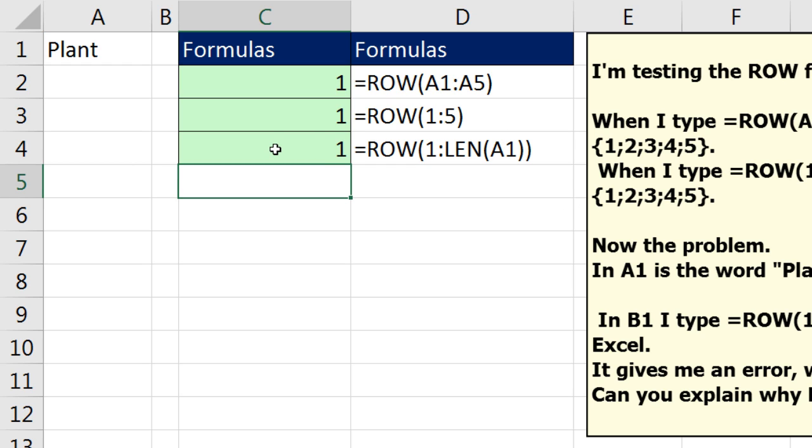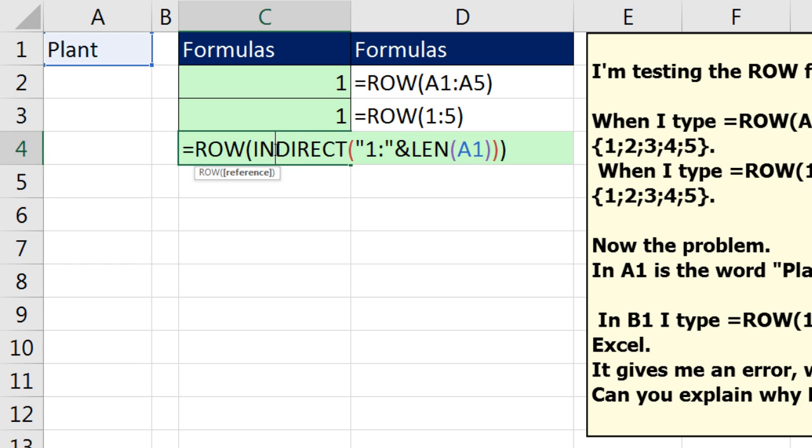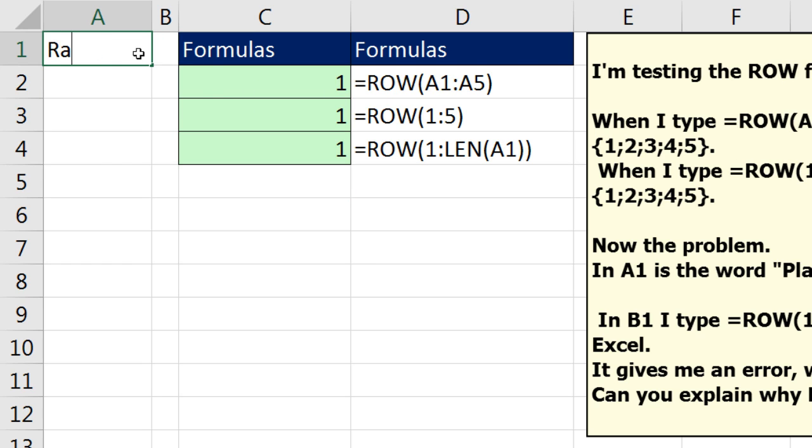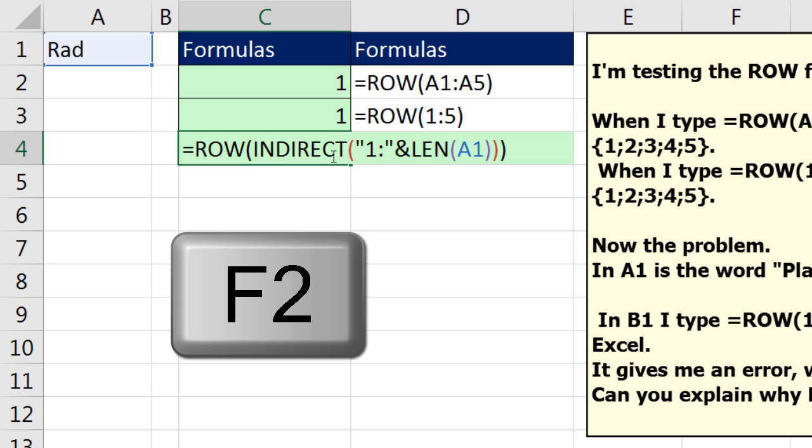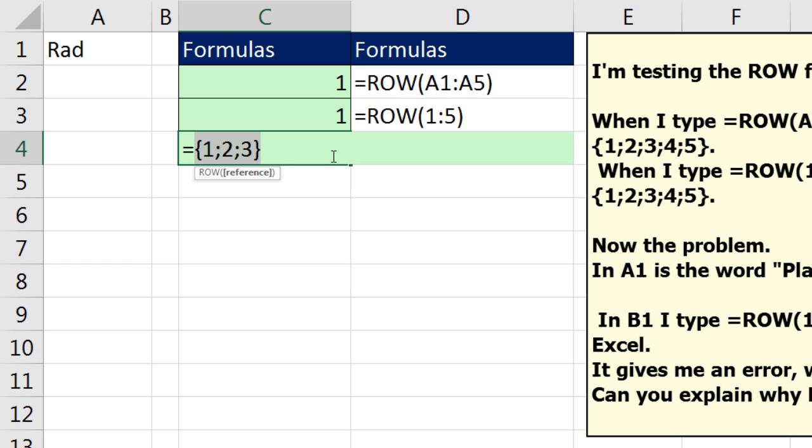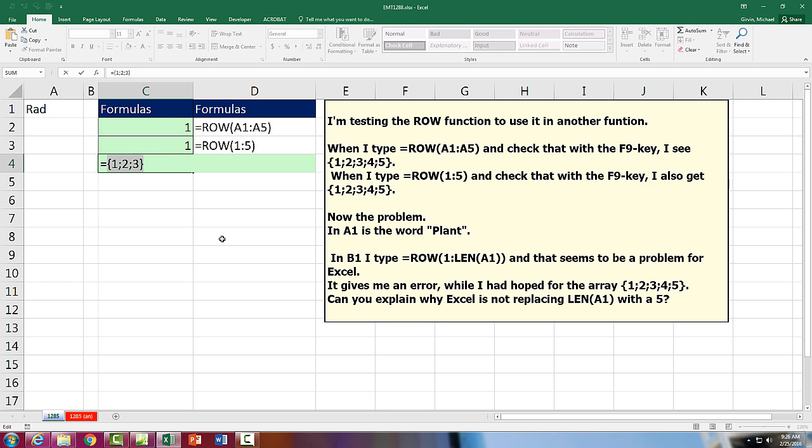Now, of course, it's not going to display that whole array. This person was trying to use this in a larger array formula. But if I change this to red, and now come down here, F9, I can see it's a dynamic array of sequential numbers now, 1 to 3, based on the length of whatever text we put in cell A1. Control-Z.